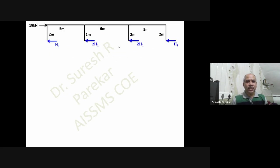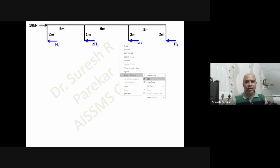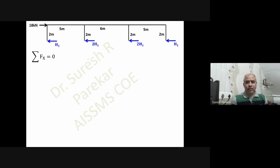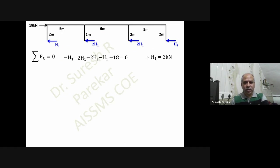Using the third assumption, internal shear is twice that of external shear. We have two H1 for internal columns, so the equilibrium equation is: minus H1 minus 2H1 plus 18 equals zero, giving H1 equal to 3 kilonewtons.